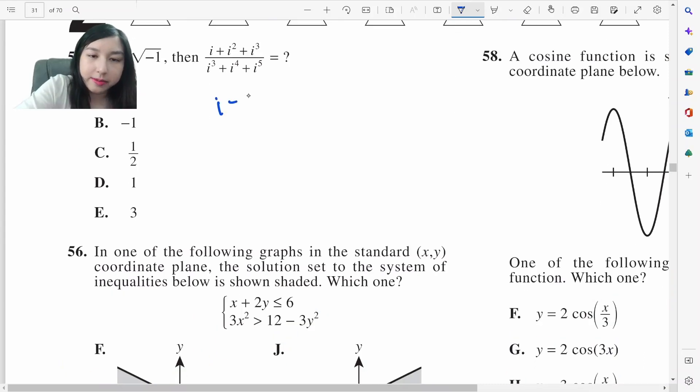Simplify this. i minus 1 minus i over negative i plus 1 plus i. Cancel, cancel, cancel, cancel.